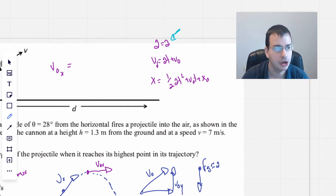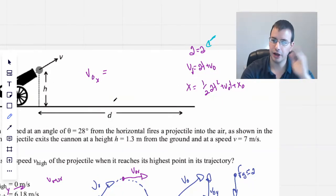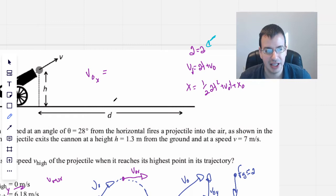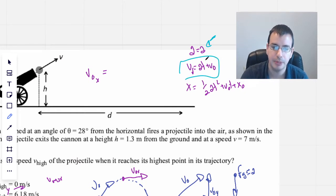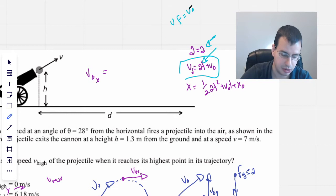So the speed in the x direction, velocity in the x direction, will be constant. You can see from the second equation here, because the acceleration in the x direction is zero, therefore you have V final equals V initial for everything in the x direction.